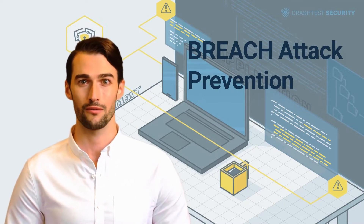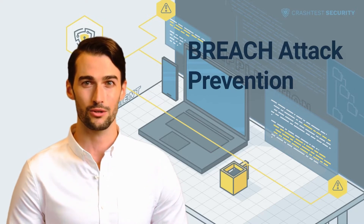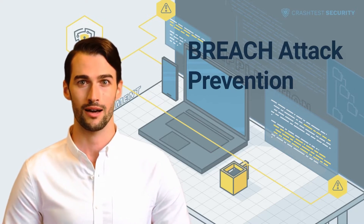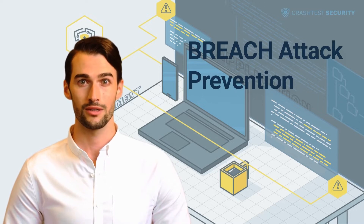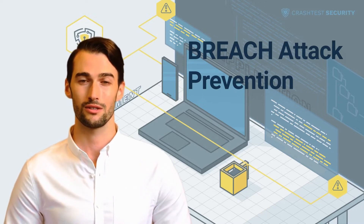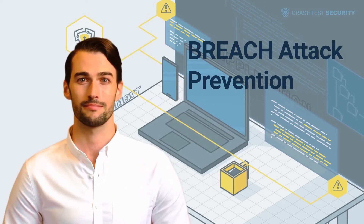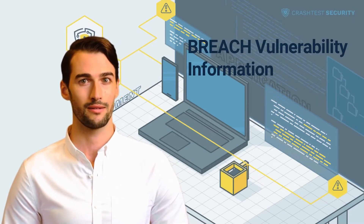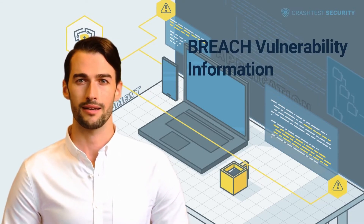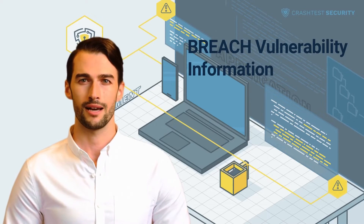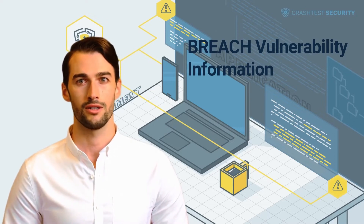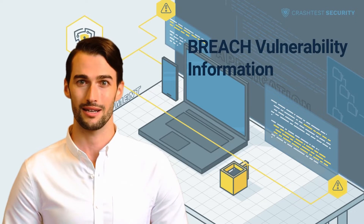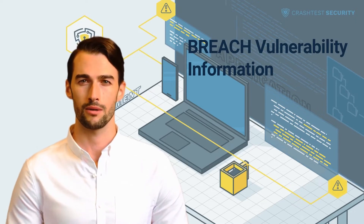A server vulnerable to a BREACH attack — Browser Reconnaissance and Exfiltration via Adaptive Compression of Hypertext — allows an attacker to decrypt cookie contents, such as session information. The BREACH attack can be considered an instance of the CRIME attack (Compression Ratio Info Leak Made Easy), as it is based on and largely follows its logic. It targets vulnerabilities in data compression in the HTTP protocol.